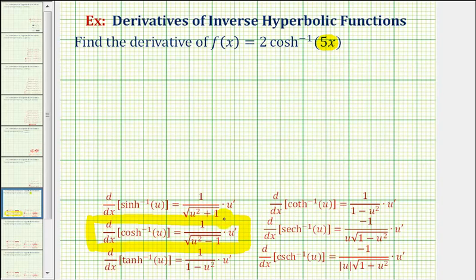Some textbooks like to write this as a single fraction where u prime is in the numerator, but I like it in this form because it emphasizes that we're applying the chain rule.